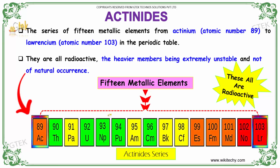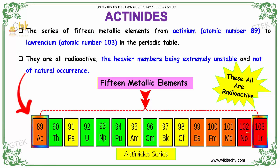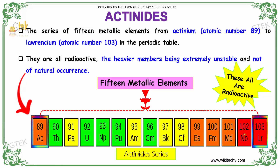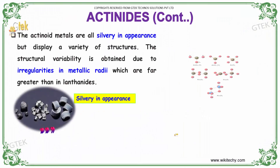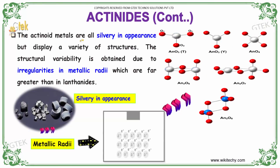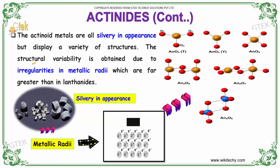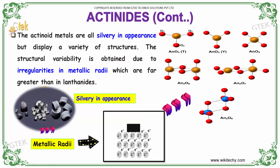The actinides range from atomic number 89 to 103. They are all radioactive, with the heavier members being extremely unstable and not available as natural occurrences. The actinide metals are all silvery in appearance, but display a variety of structures. This structural variability is due to irregularities in metallic radii, which are far greater than in lanthanides.